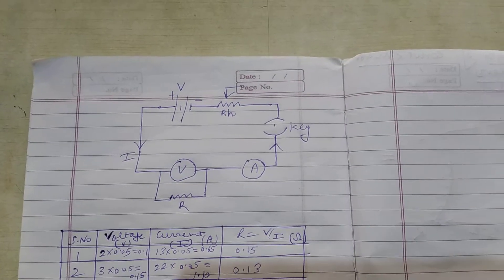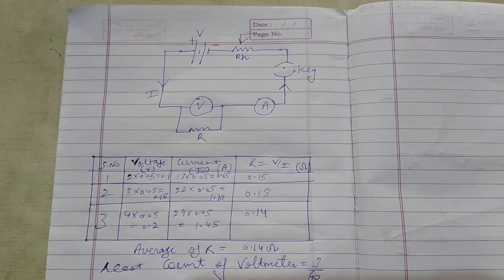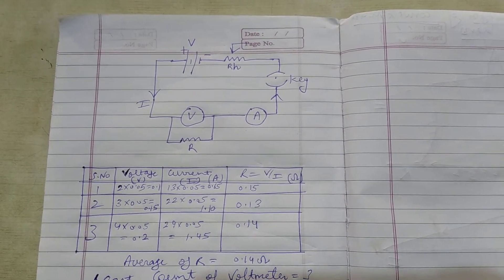So this is the circuit diagram and this is the table where we have to find the readings for voltage and current.